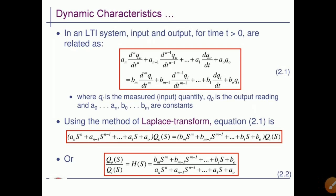The values a_n, a_(n-1), a_1, a_0, b_m, b_(m-1), b_1, b_0 are all constants. Like this, the linear time invariant system can be written.